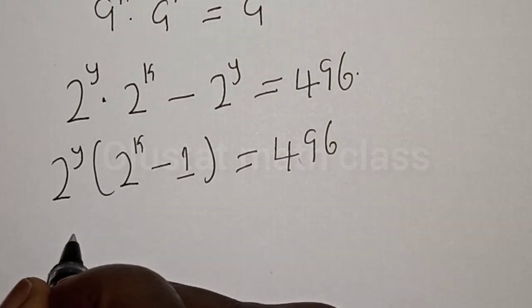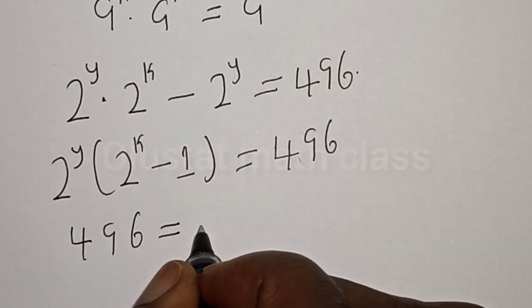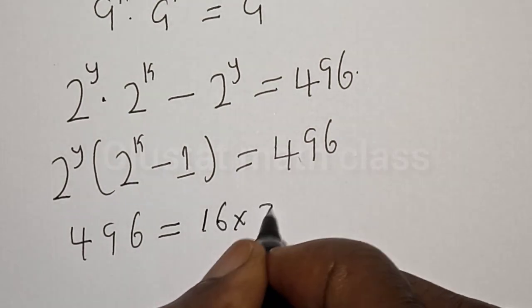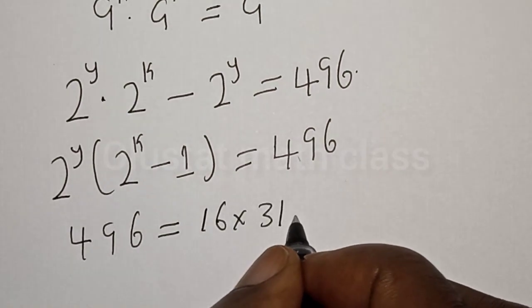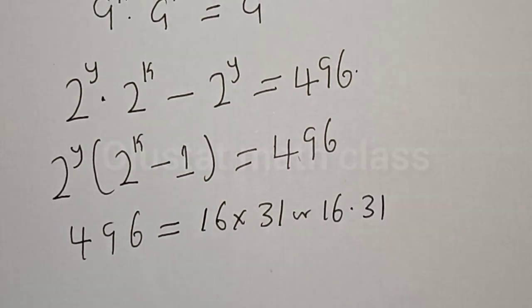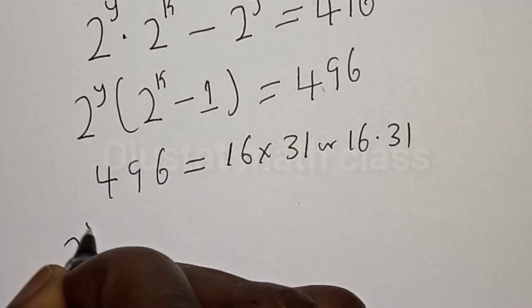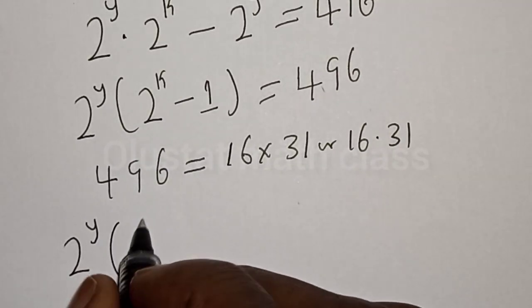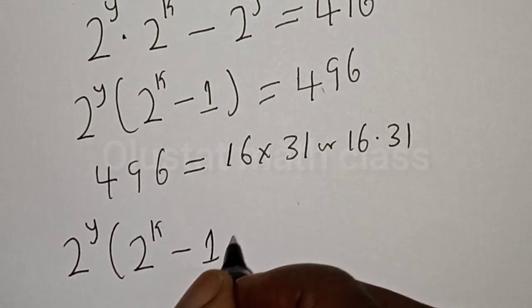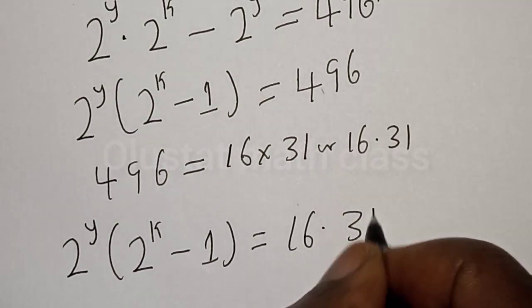But 496 can be expressed as 16 multiplied by 31. Therefore our equation becomes 2 raised to power y, multiplied by (2 raised to power k minus 1), is equal to 16 multiplied by 31.